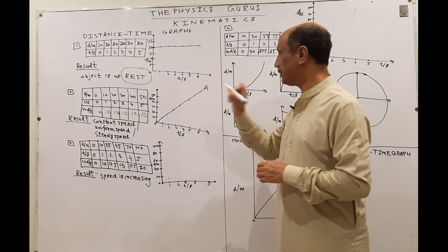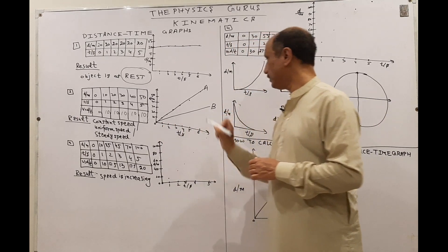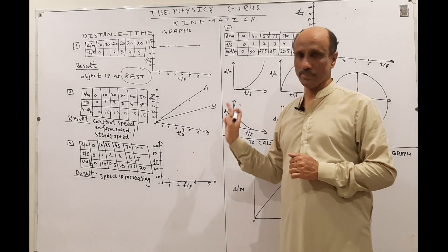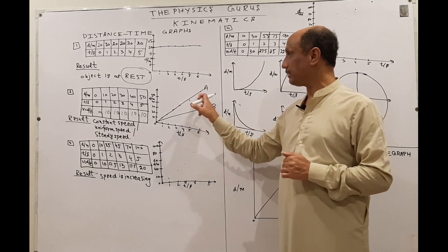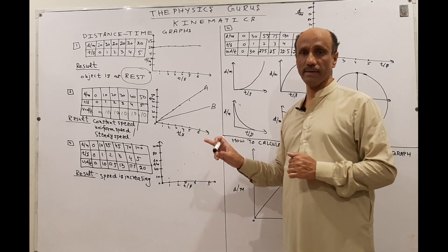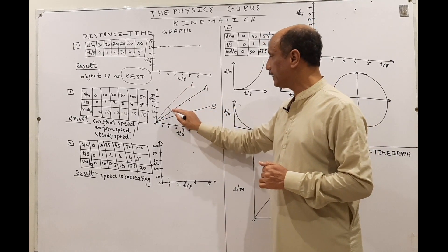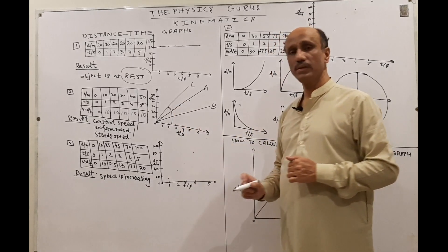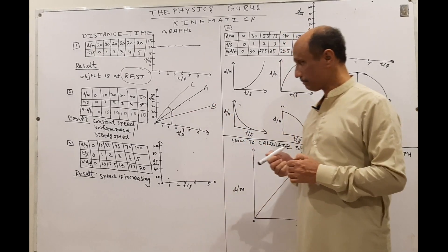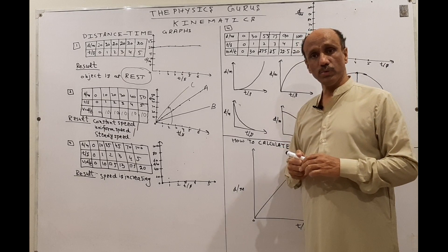If line A represents one object's speed, and I draw another straight line B with a lesser inclination, the speed of B is constant but less than A because the slope of B is less. If I draw a third line C with a greater angle than A, then the speed of C is more than A, while the speed of B is less than A. So steeper slope means greater speed in a distance-time graph.